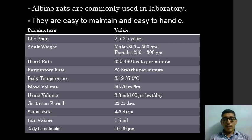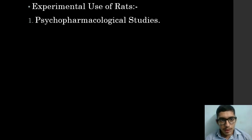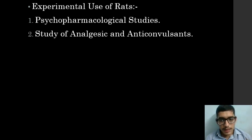The blood volume of rats is 50 to 70 ml per kg. The urine volume is 3.3 ml per 100 grams. The gestation period is 21 to 23 days. The estrus cycle is 4 to 5 days. The tidal volume is 1.5 ml, and daily food intake is 10 to 20 grams. Experimental uses of rats include psychopharmacological studies — that is, studying pharmacological activities of psychotropic drugs — and the study of analgesics and anticonvulsant drugs.